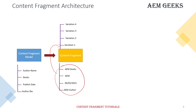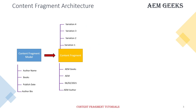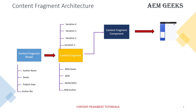You can create different variations of the content fragment data. Each variation can have different content — variation one can have different content, and variations two, three, and four can have different data for the same content fragment model. You can use any variation on pages. To use the content fragment on pages, you use a content fragment component, which is available by default with the core components or you can create your own. You configure the content fragment using this component and can select any variation, either master or any custom variation.